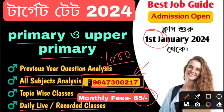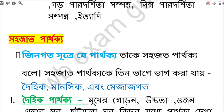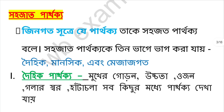নম্বরটা লিখে রাখো: 96473 00217। এই নম্বরে contact করো, তোমার নামটা register করো। মাসিক ফি রয়েছে মাত্র 75 — খুবই অল্প ফি রাখা হয়েছে। তোমরা প্রথম থেকে ক্লাস করো যাতে প্রতিটা জিনিস তোমরা ভালোভাবে clarification করতে পারো।